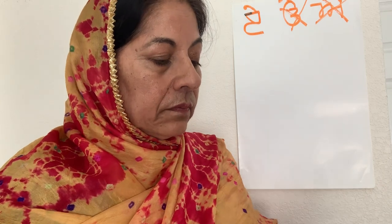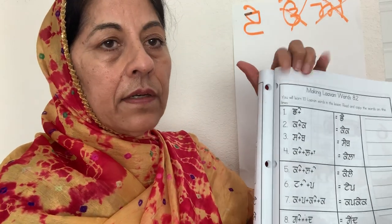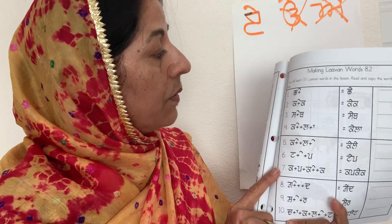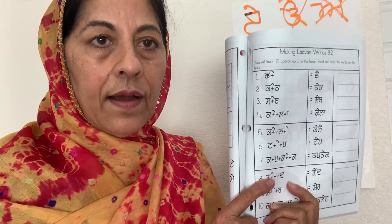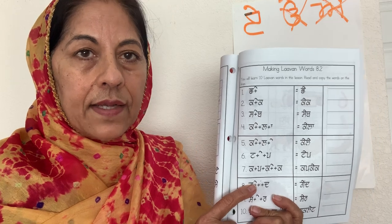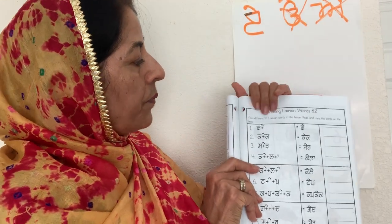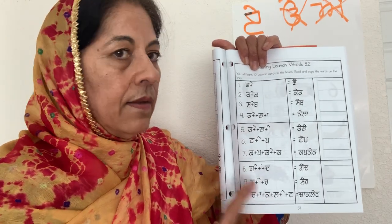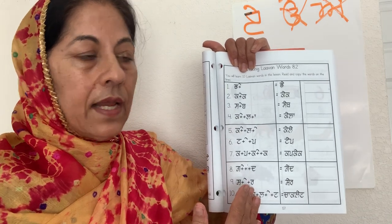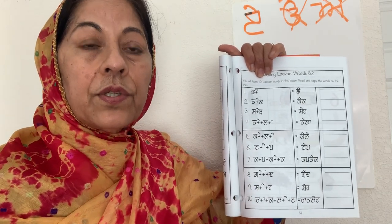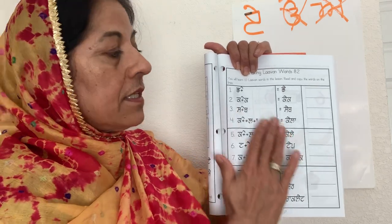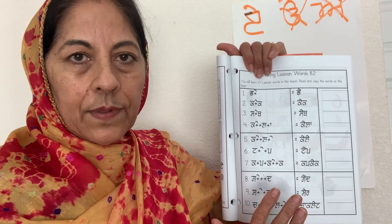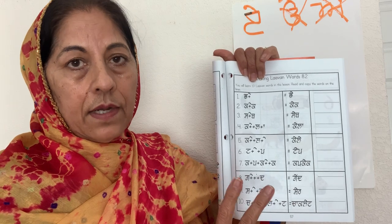Now on this page, page 57, we are going to learn ten words that have Lama in them. Say the word 'lama'. Lama is the matra we are learning today. You have learned all the letters and all the matras we are using in this lesson — nothing that you haven't learned is on this page. The whole lesson only focuses on ten words, so you should be able to master them.